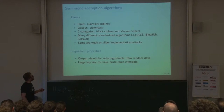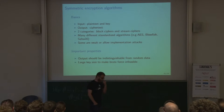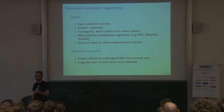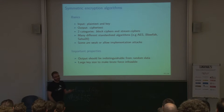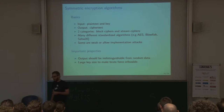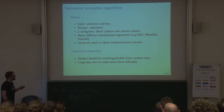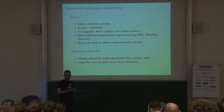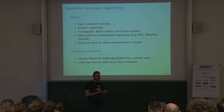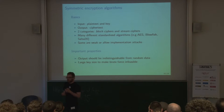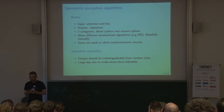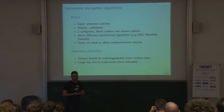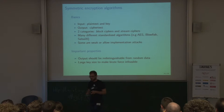Let's do a short excursion into symmetric encryption algorithms. Basically, a cipher takes plain text you want to encrypt and a key, and gives you the encrypted version of the plain text. There are two basic categories: block ciphers — like AES or DES — and stream ciphers. Stream ciphers are a bit less well known, but RC4 was in the news because it was in TLS for quite some time, and it's weak.